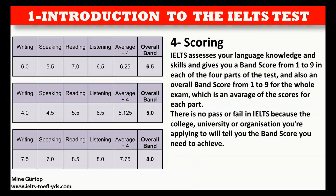IELTS assesses your language knowledge and skills and gives you a band score from 1 to 9 in each of the four parts of the test, and also an overall band score from 1 to 9 for the whole exam, which is an average of the scores for each part. There is no pass or fail in IELTS — the college, university, or organisation you're applying to will tell you the band score you need to achieve.